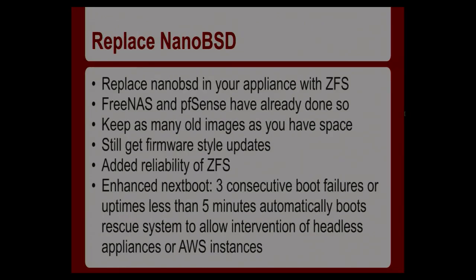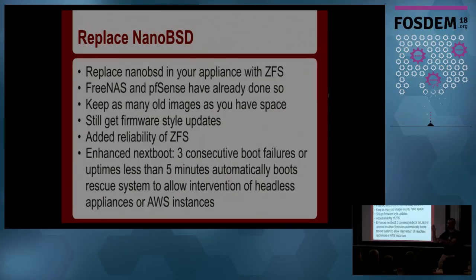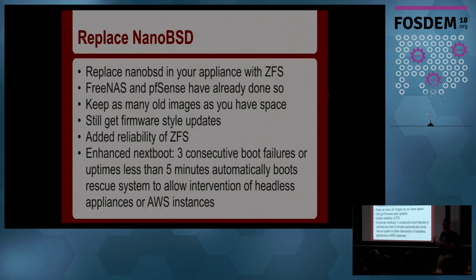We'd also like to replace or provide an alternative to NanoBSD, a tool in FreeBSD previously used to build appliances like FreeNAS and PFSense. With UFS, you'd partition your hard drive in half, boot off one, and when upgrading install the new version in the second partition and boot from that — failing back to the first if it fails. With ZFS, you can have the last ten versions to fall back on. Both FreeNAS and PFSense have switched to this in their latest versions using ZFS and boot environments, so you can have as many old images as you want plus all the extra ZFS features for free.